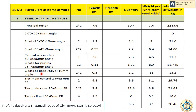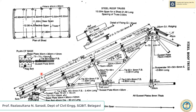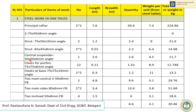Next are cleats at the base, 75 x 75 x 10 mm angle. The plan of the base shows dimensions 30 x 30 x 12 mm. There are 2 cleat angles at each base, and with both bases that gives 4 total. The dimension is 0.3 m, so quantity is 1.2. Multiplying by weight per unit gives a total of 13.2 kg.